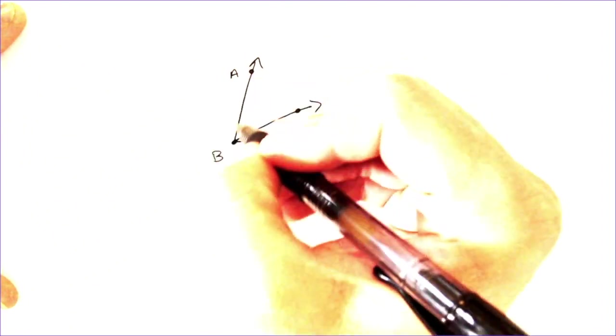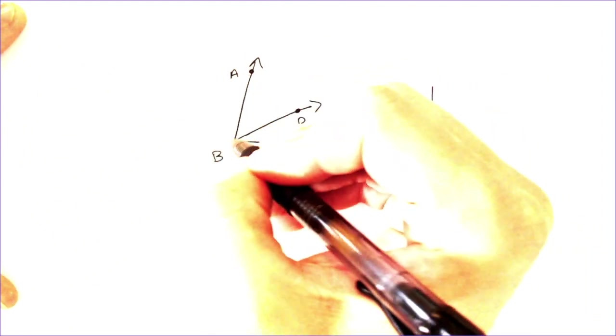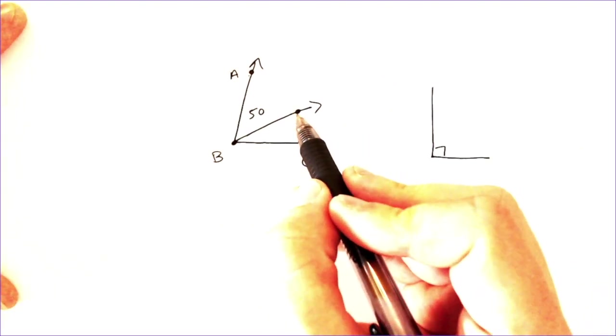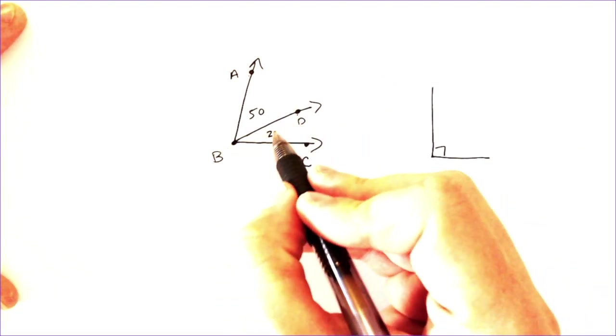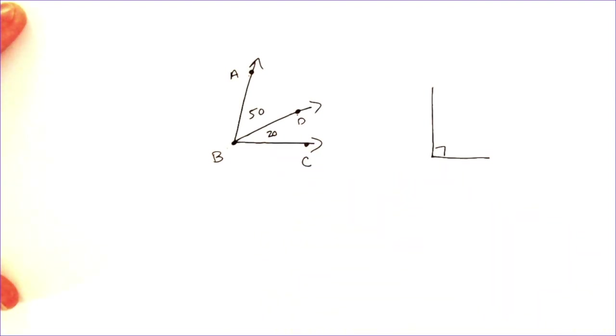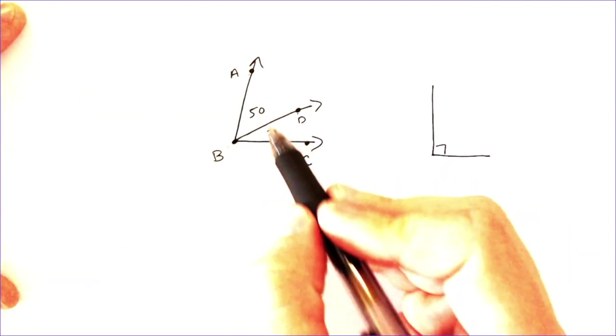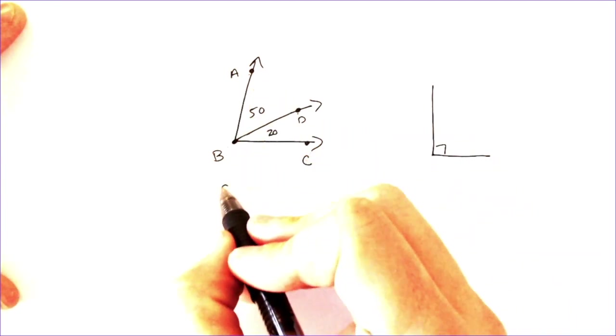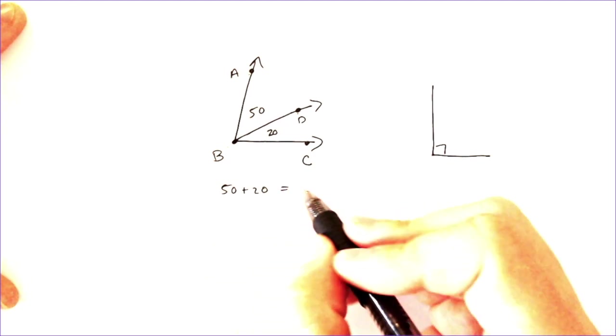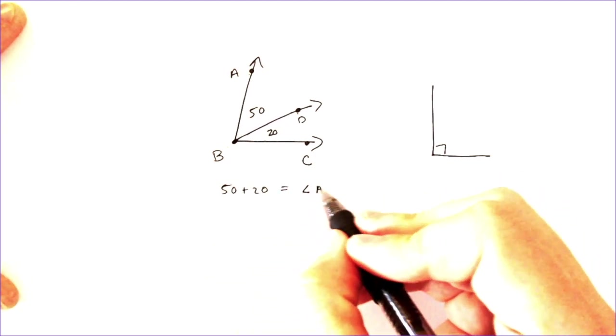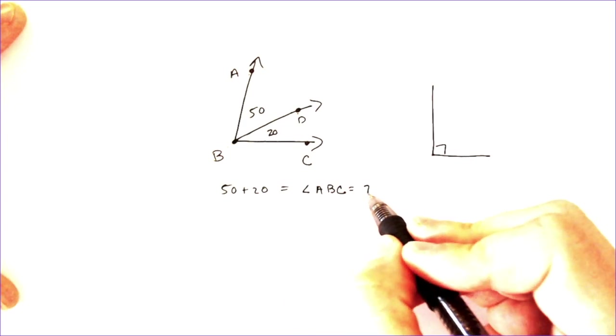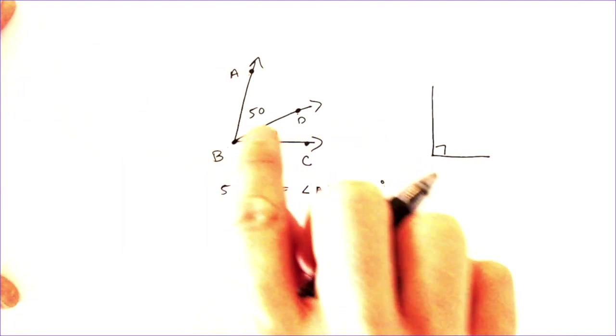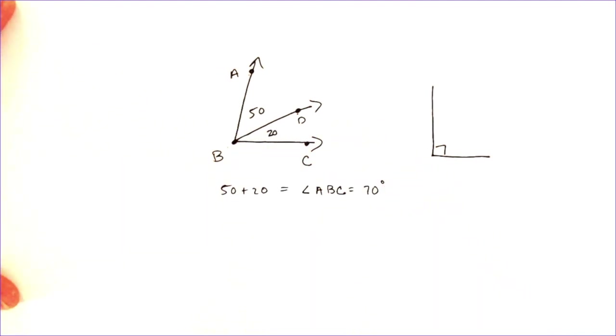So, if this smaller part right here, from A to B to D, is 50, and this even smaller part, DBC, this really tiny part, was 20, then I could add those two parts together to get the entire angle, which would mean that 50 and 20 would mean the angle ABC is equal to 70. So, it's a relatively simple idea where you just take the two smaller parts of the angle and you add it up to get the whole thing.